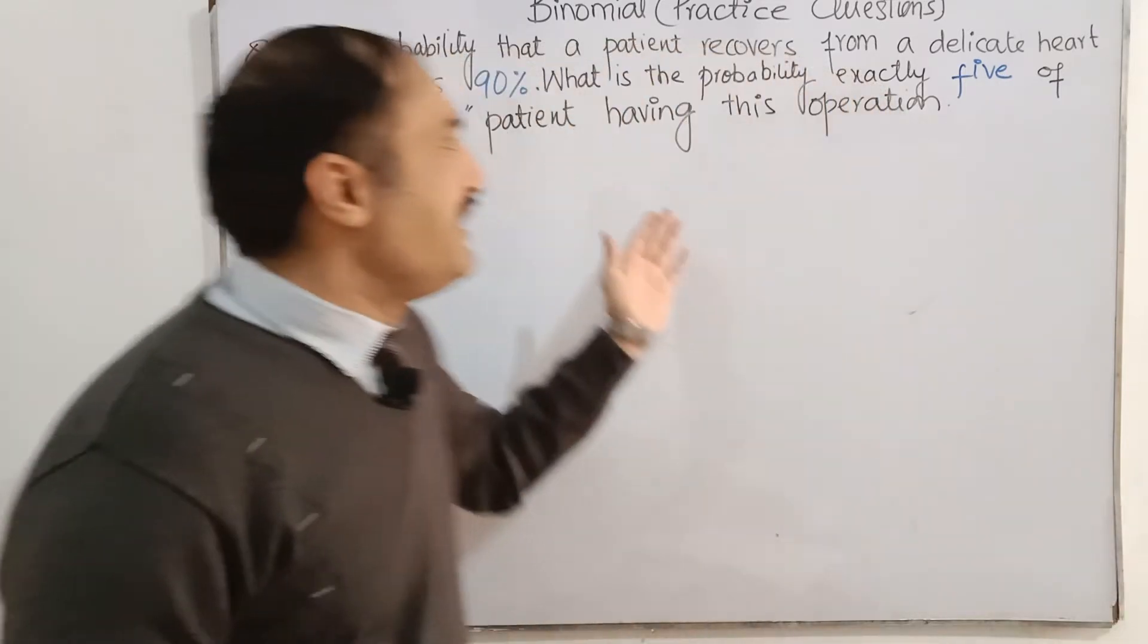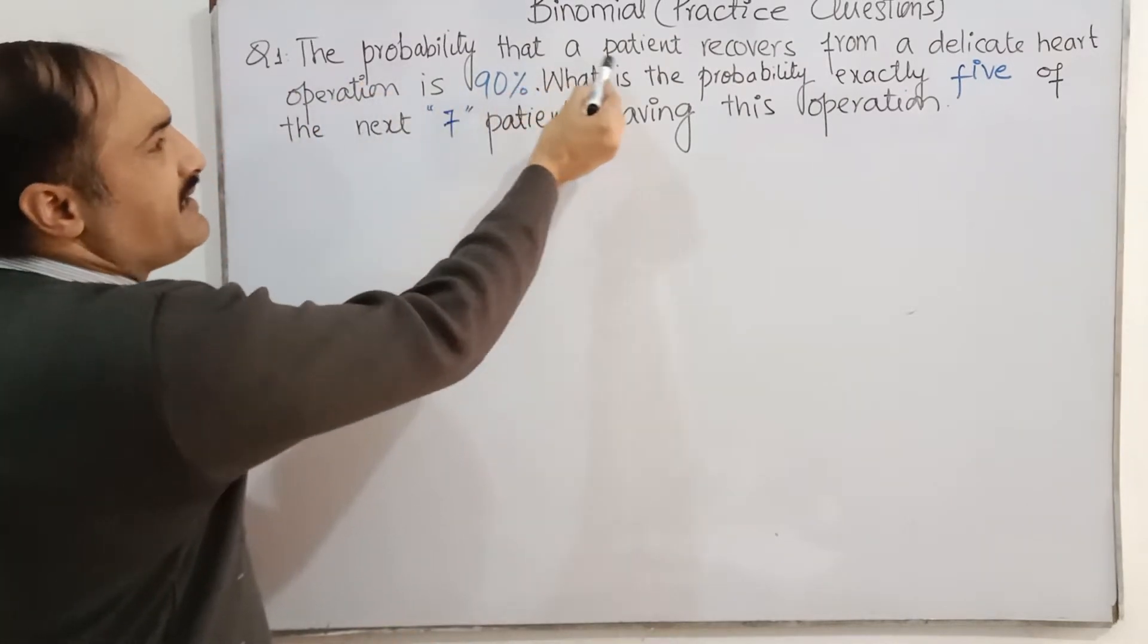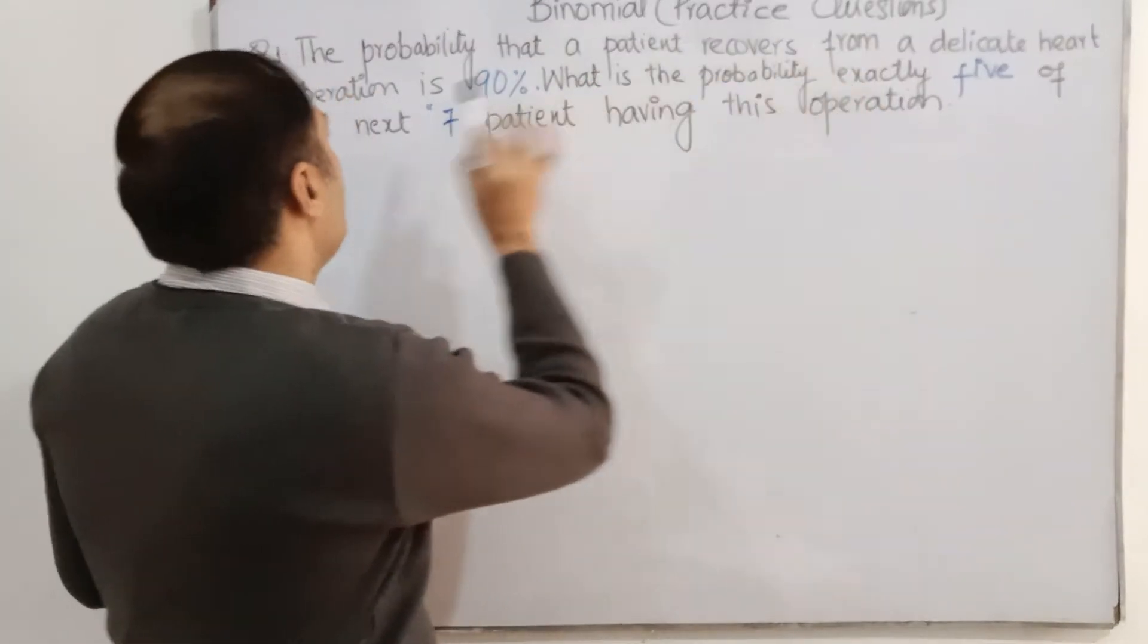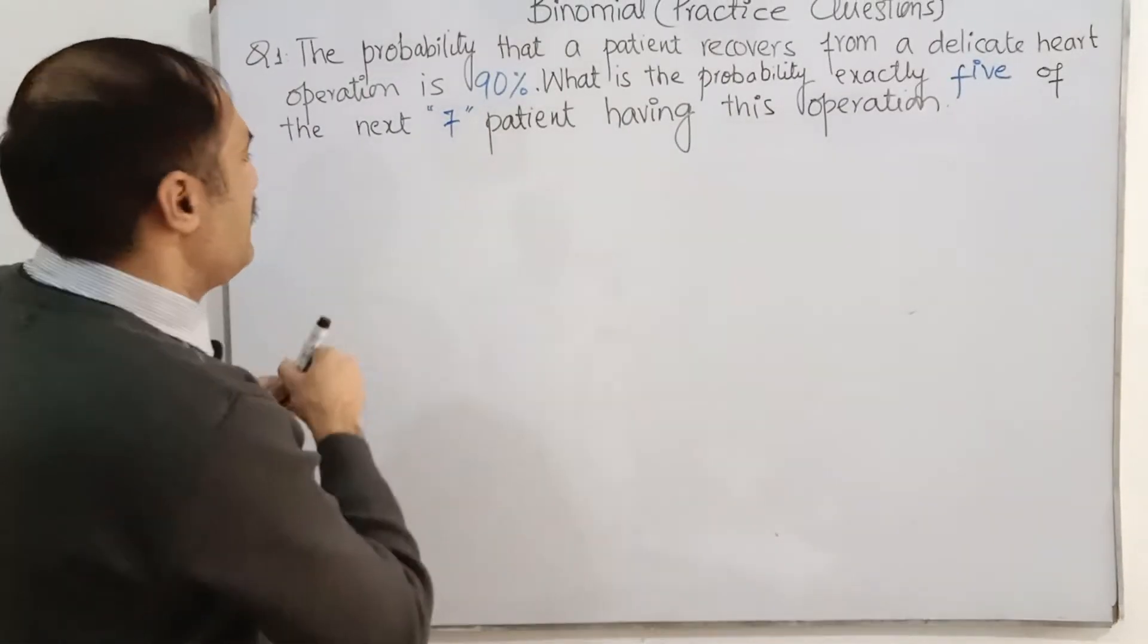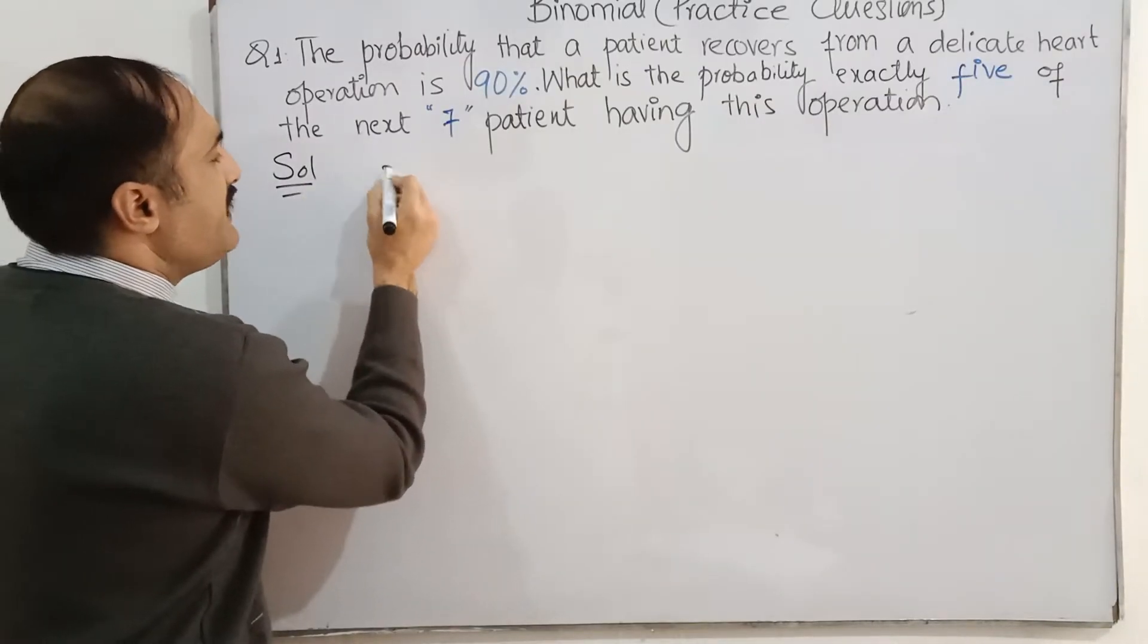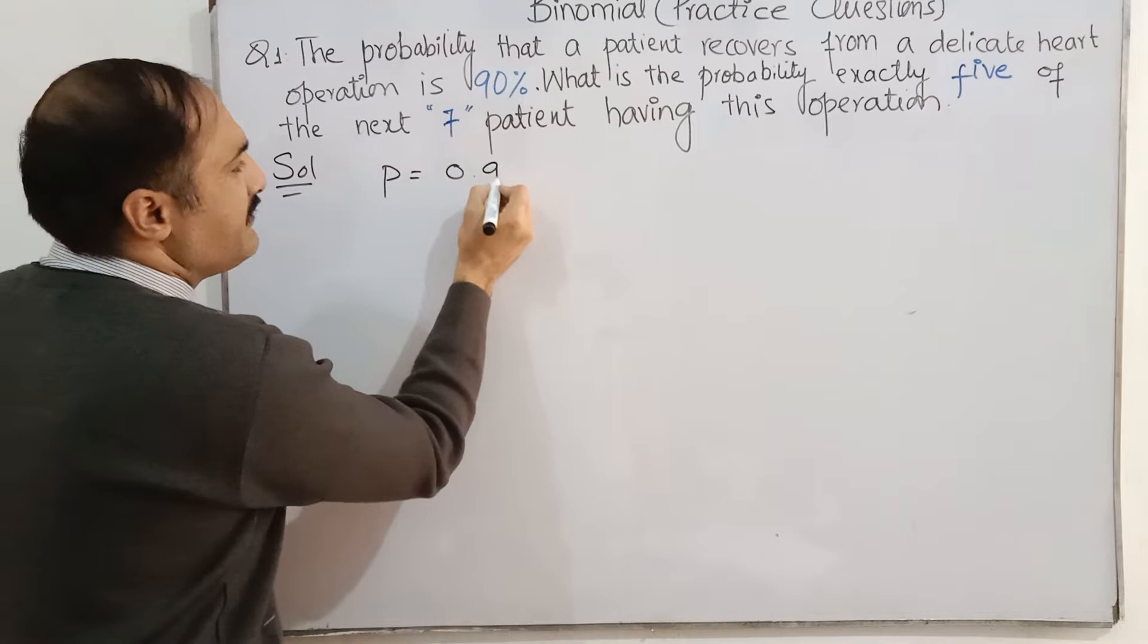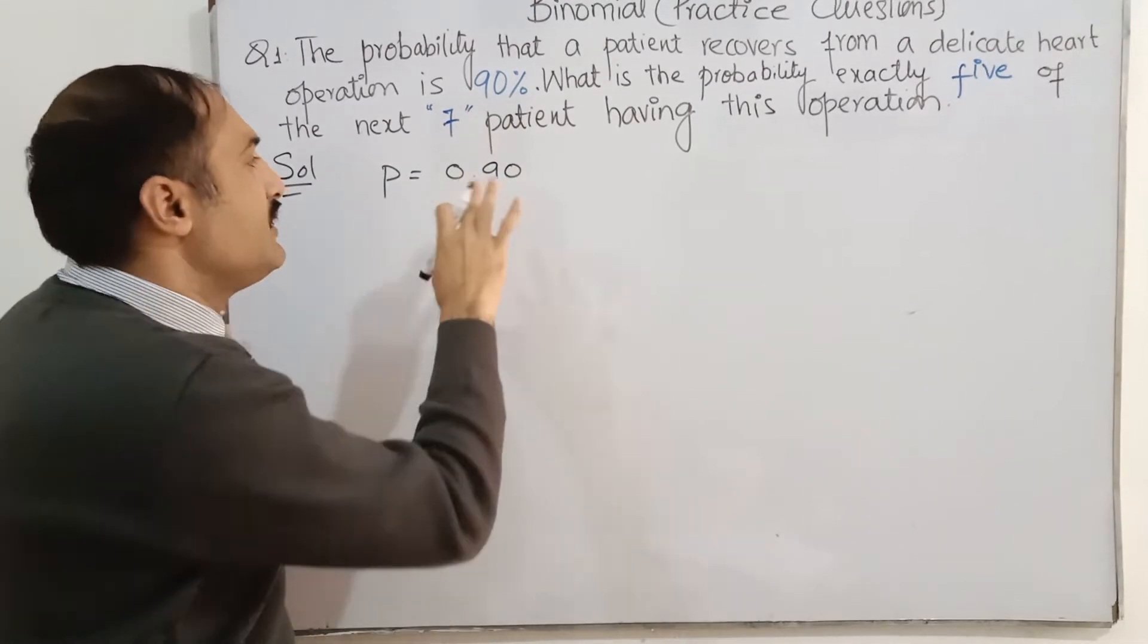Here I have already written the question: the probability that a patient recovers from a delicate heart operation is 90%. So here is the probability of success. What is the probability of success? P is equal to 0.9. 90% means 0.9, divided by 100 is equal to 0.90.